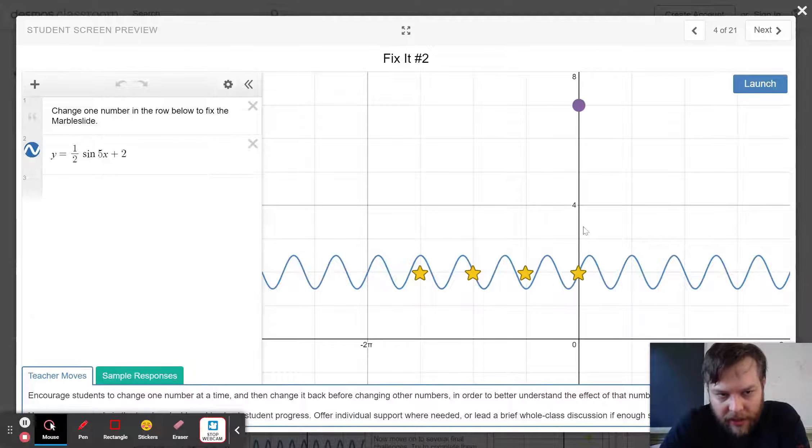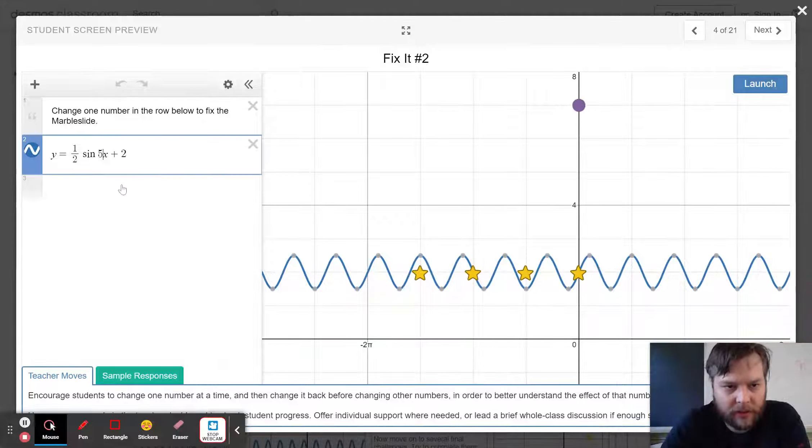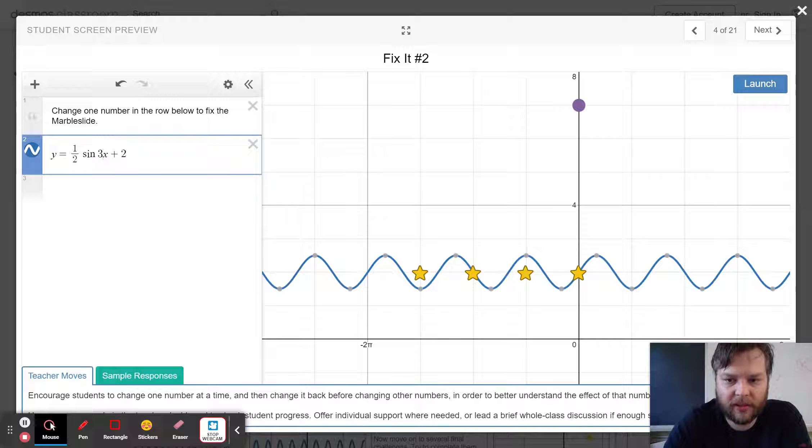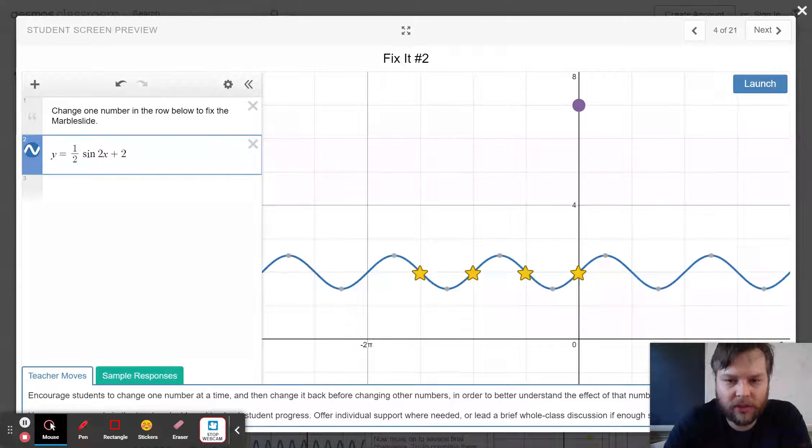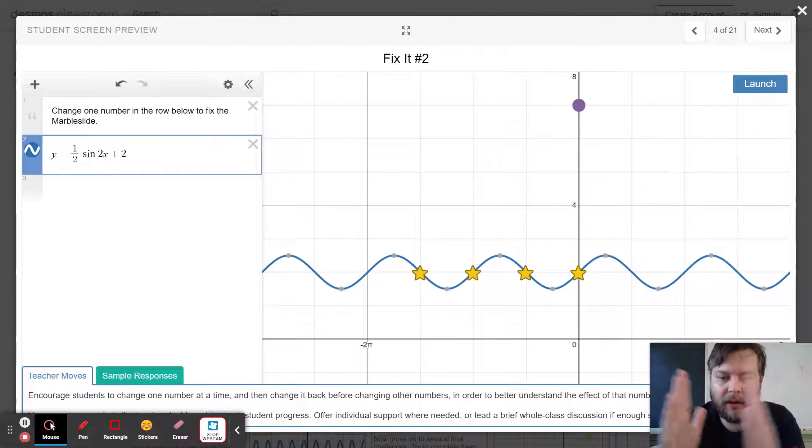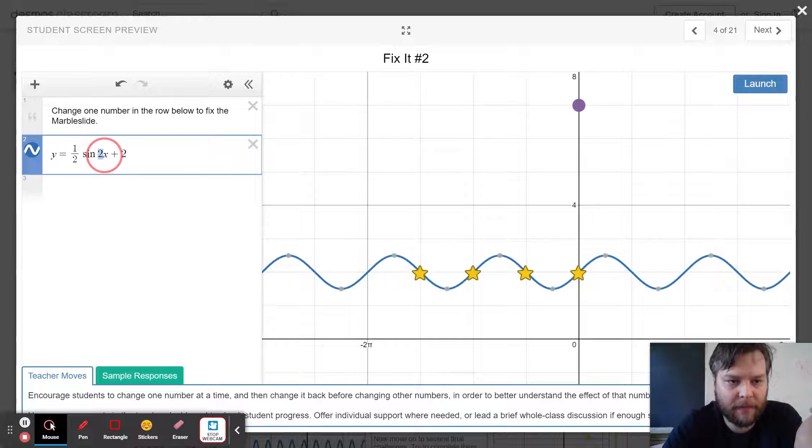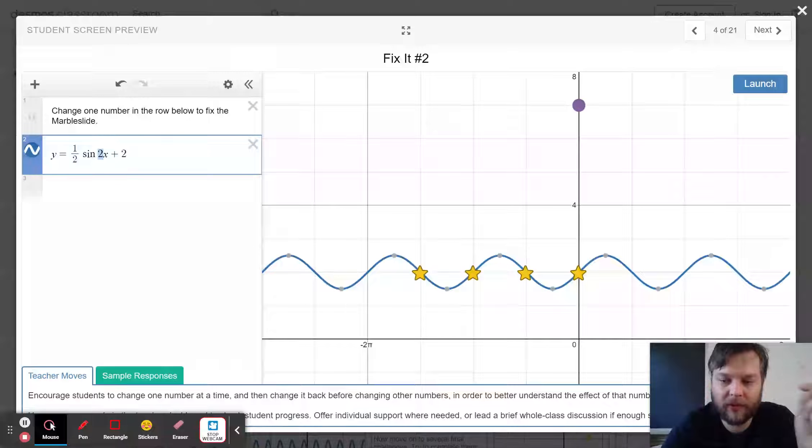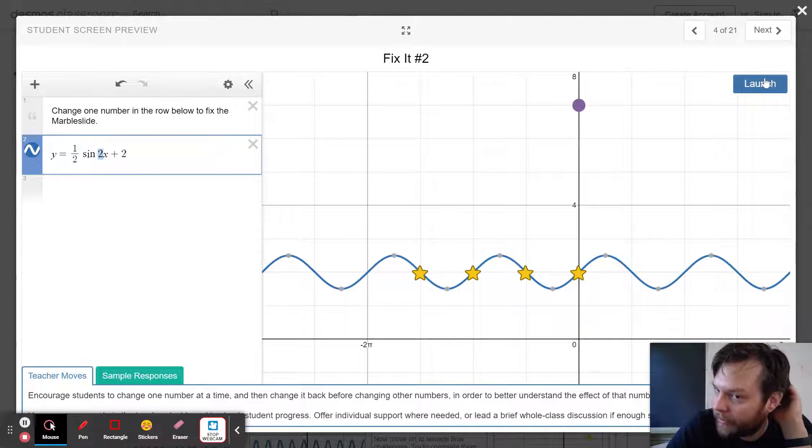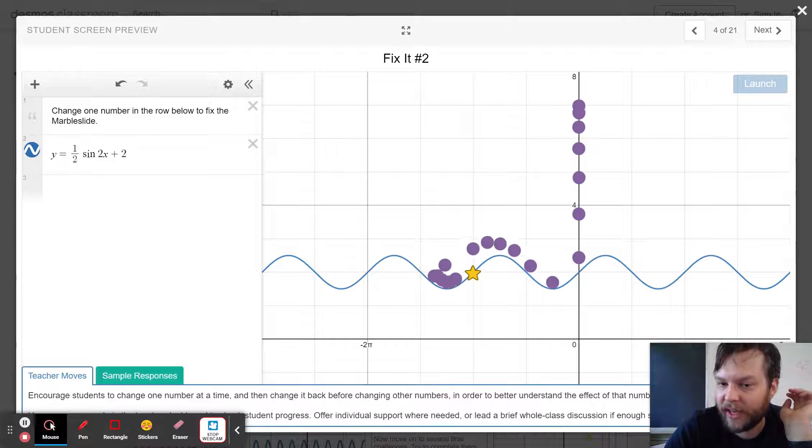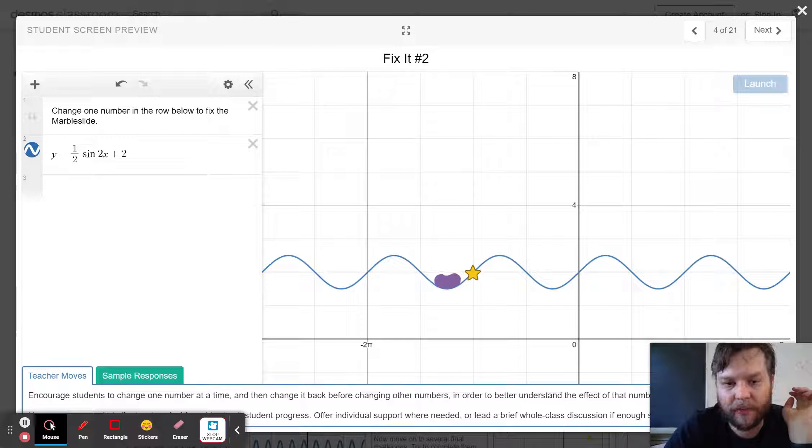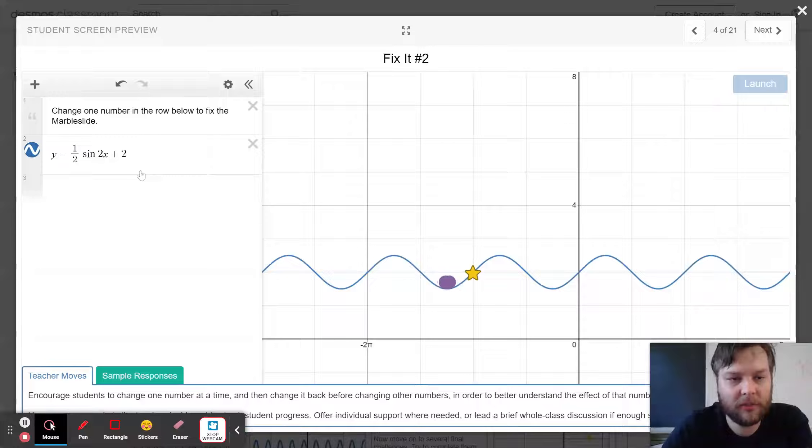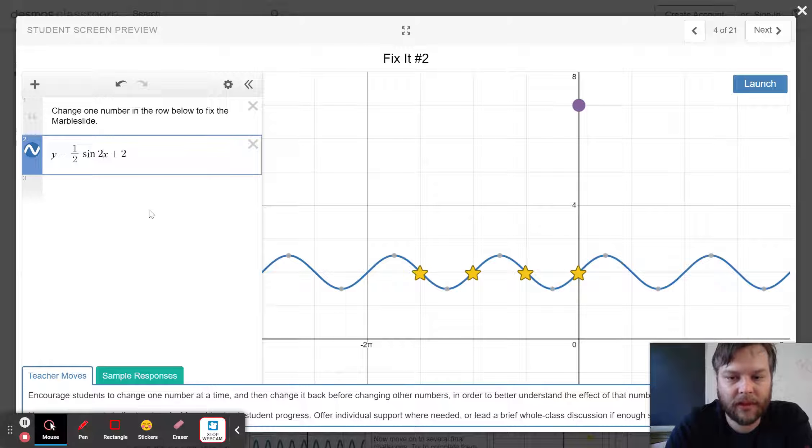Here, I think that the trick is that my waves are too tight together. So I'm going to change the five to a two. When I have a bigger number inside here that makes it more frequent of the wiggles. So the bigger the number, the tighter together that your function is. The smaller the number, the further apart they are.